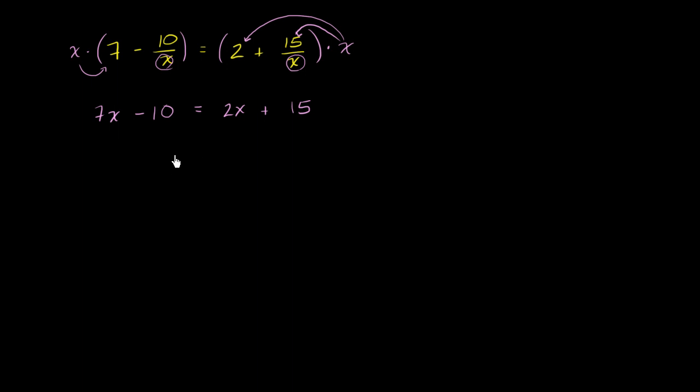We have the variable on both sides. So we just have to do some of the techniques that we already know. So the first thing that I like to do is maybe get all my x's on the left-hand side. So I want to get rid of this 2x right over here. So I subtract 2x from the right-hand side. Now, and I always remind you, I can't do that just to the right-hand side. If I did it just to the right-hand side, it wouldn't be an equality anymore. You have to do that to the left-hand side as well.